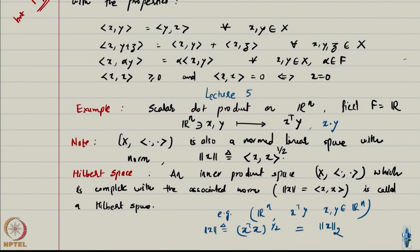Just like a complete normed linear space is a Banach space, a complete inner product space is called a Hilbert space — just terminology. We can assess completeness here because the inner product gives a norm, so we can check convergence and Cauchy convergence in that norm. Banach spaces and Hilbert spaces are the nice spaces we always work in — not just in this course, but also in control, PDE analysis, and related courses. It is very difficult to work without these assumptions.